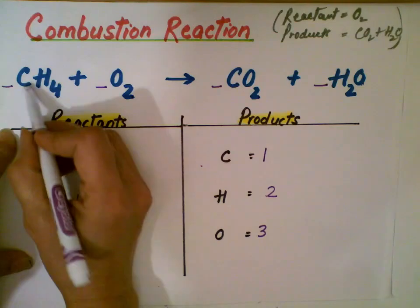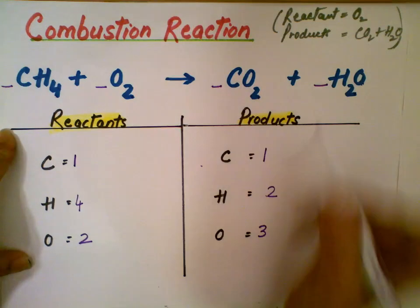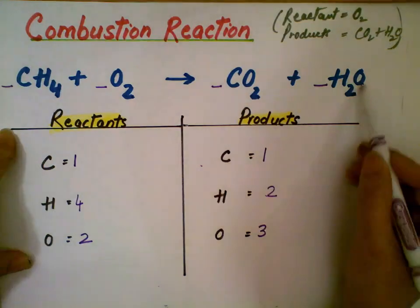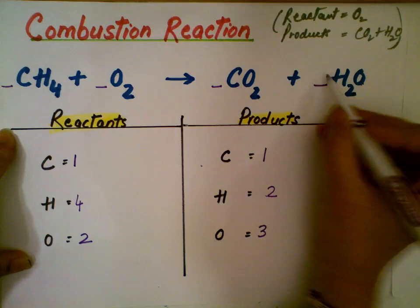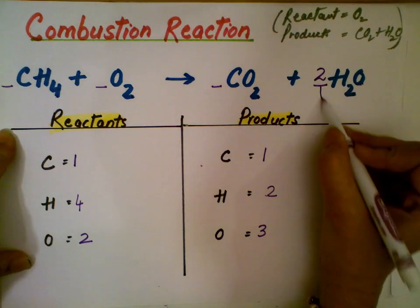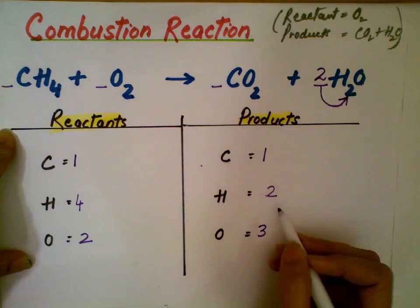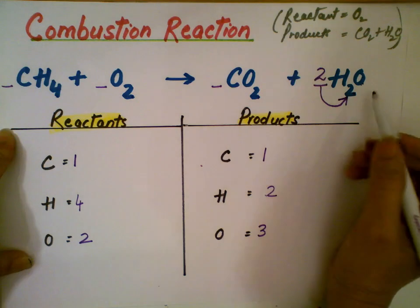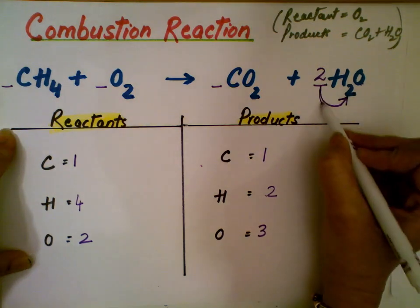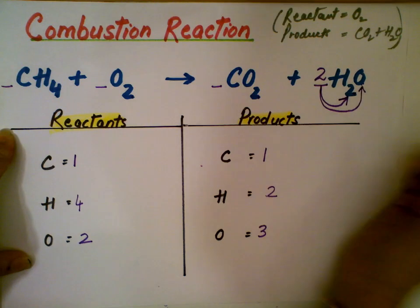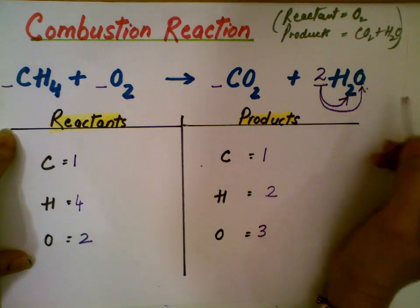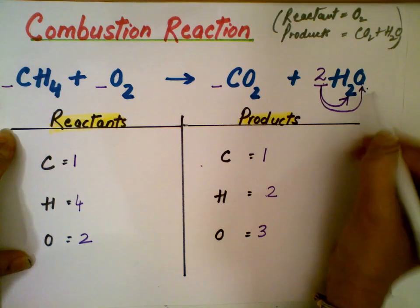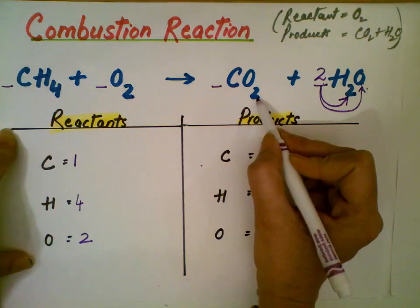So my carbon is 1 on both sides — perfect. Hydrogen is 4 here but only 2 here. So if I put 2 in front of H2O, this will be 2 times 2, giving 4 hydrogen. Now when I do that, the number of oxygen changes on the right side: 2 times 1 gives 2, and then you have this 2, so 2 plus 2 — it becomes 4 oxygen.